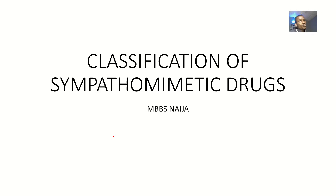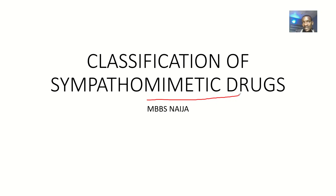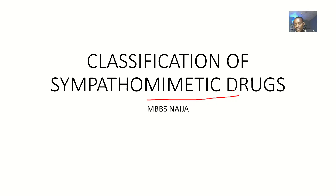Everyone watching this video should know what a sympathomimetic drug is. A sympathomimetic drug is basically a type of drug that will mimic the action of the neurotransmitters that mediate the sympathetic nervous system — those are noradrenaline and adrenaline. We'll be talking about these drugs and their classifications, because they are subdivided into two main categories, and that's what we'll be looking at in this video.